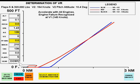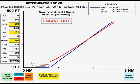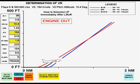The third simulation begins at a rotation speed of 150 knots, 4 knots before V-2. In this case, the V-2 of 154 knots is reached prior to 35 feet and maintained to 400 feet, so VR in this case is 150 knots.